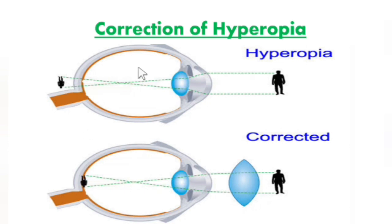Before correction, when a person was hyperopic, the image was forming behind the retina. By using a convex lens, this hyperopia can be corrected.